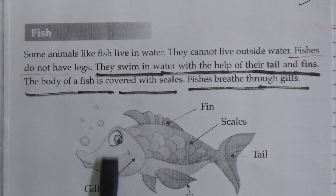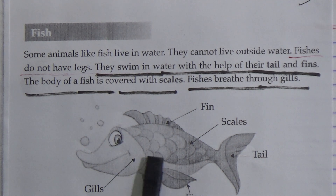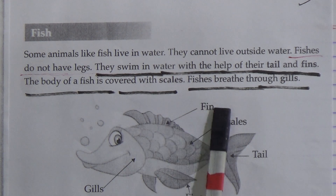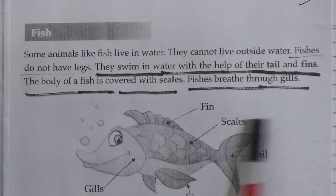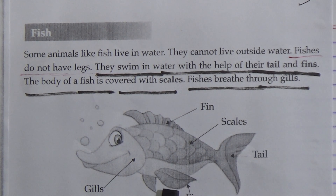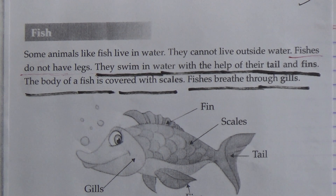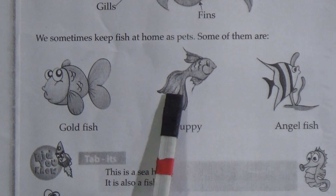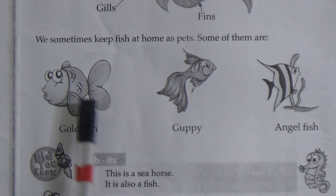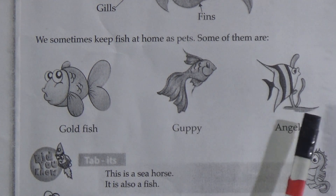See here the figure of a fish. This part is called gills, this part is called fin, these are scales, this is the tail, and this is the part of fins. We sometimes keep fish at home as pets — some of them are goldfish, guppy, and angelfish.